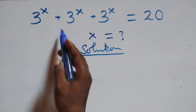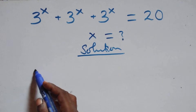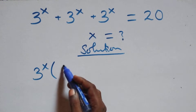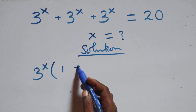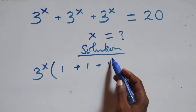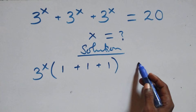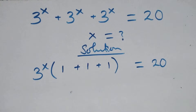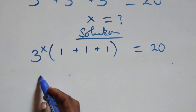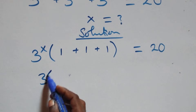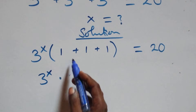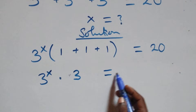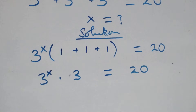What we have here, we factor 3 raised to power x. That is, we have 3 raised to power x into bracket, 1 plus 1 plus 1, left in this bracket, equals to 20 on this side. Next step, we have 3 raised to power x times 1 plus 1 plus 1, that is 3, equals to 20.